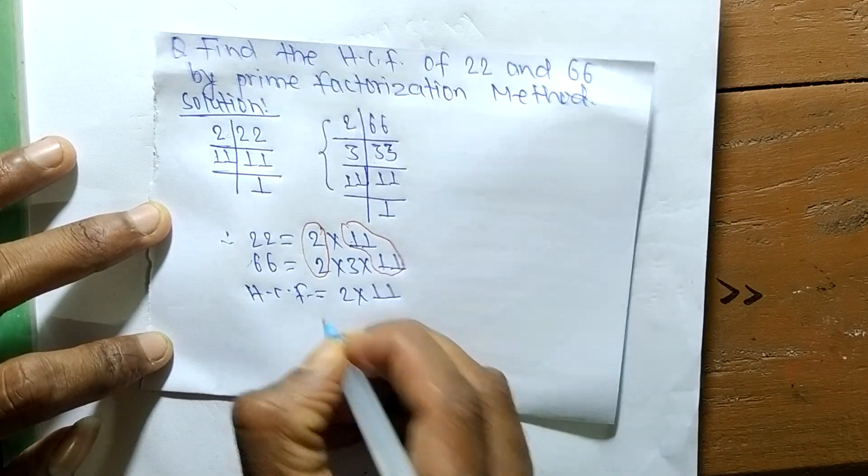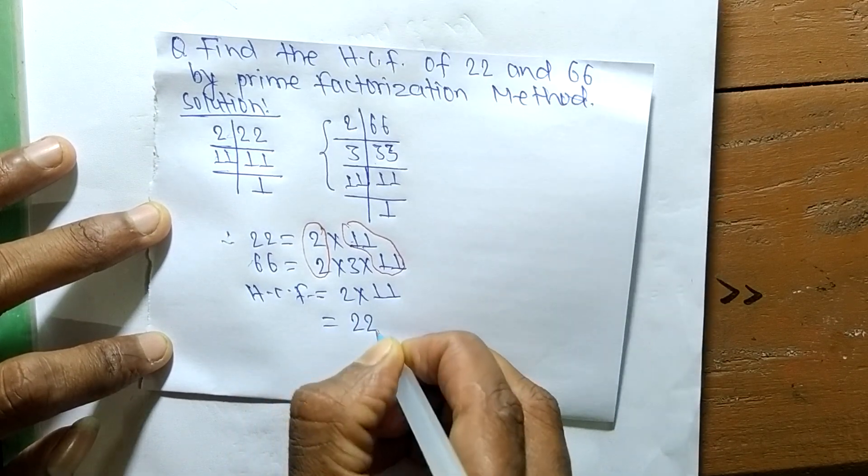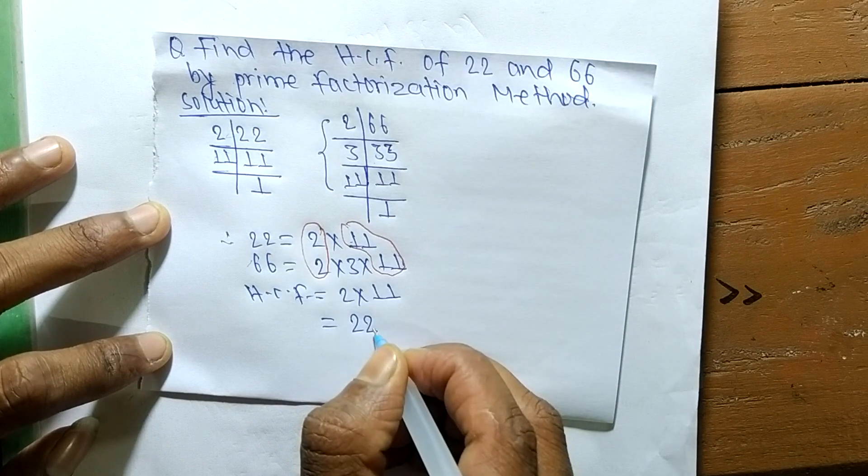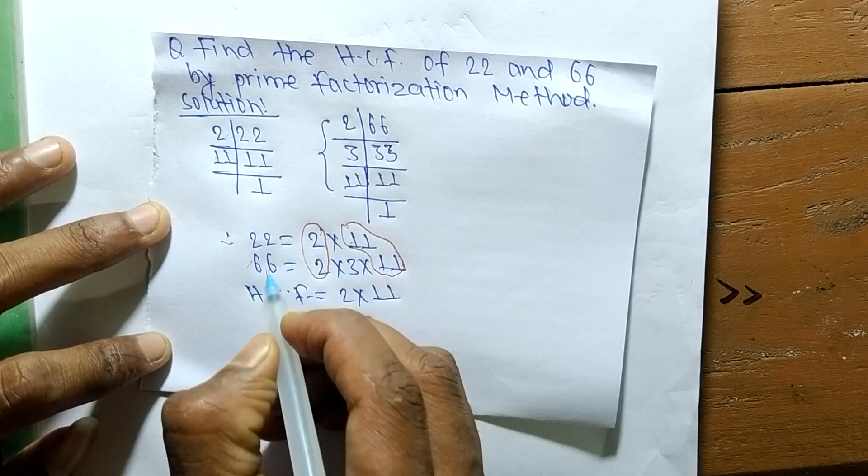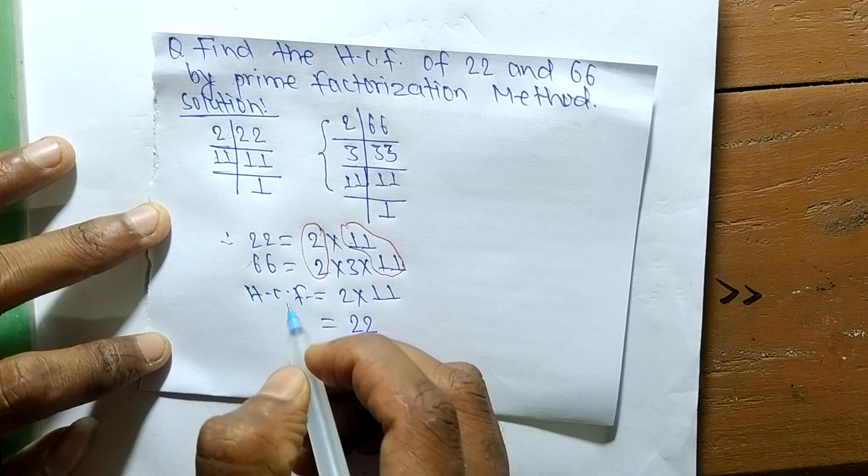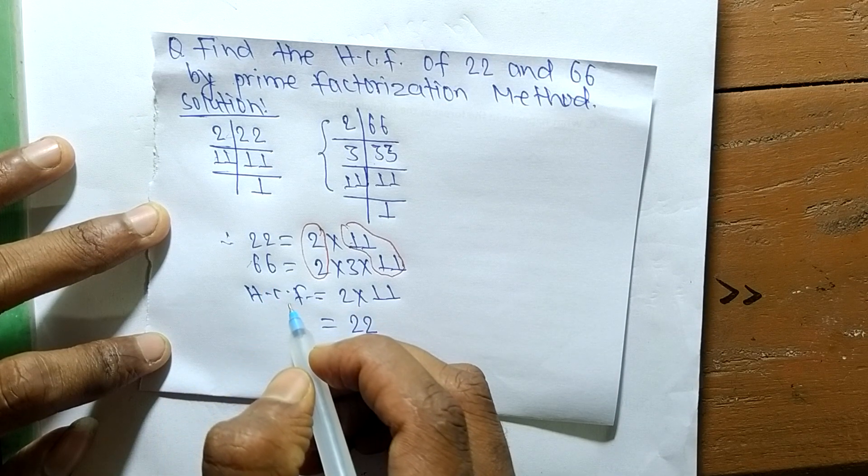So it is equal to 22. So 22 is the highest common factor of 22 and 66. So this much for today and thanks for watching.